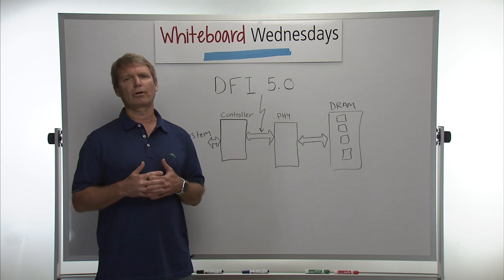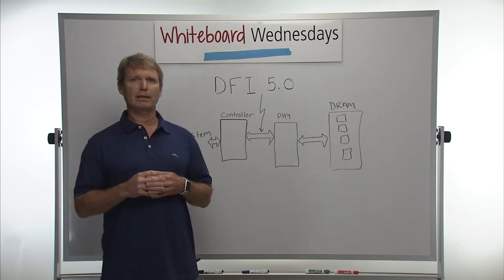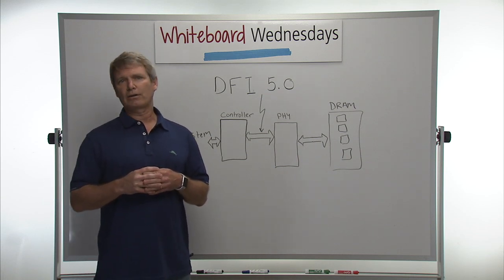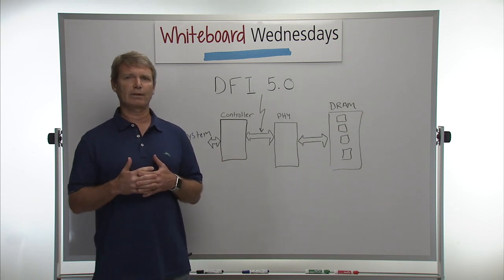It optimizes the order in which transactions are run to get the maximum bandwidth out of the DRAM interface. It allows higher priority transactions to go to the front of the transaction queue.